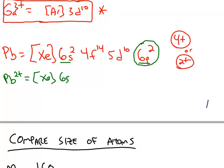we have the xenon core, 2 electrons in the 6s, 14 in the 4f, and 10 in the 5d, and both 6p electrons have been removed. That gives us the positive 2 version of lead.